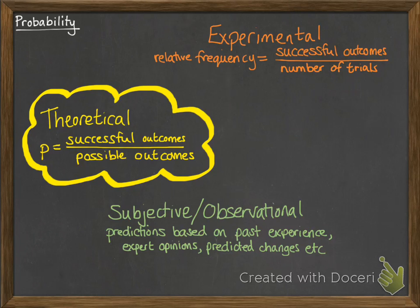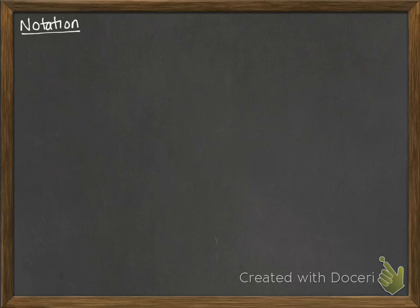Most of the time we're going to be dealing with theoretical probability. So let's have a look at the different sorts of notation that you might need to use.